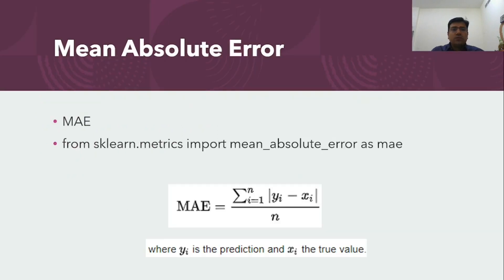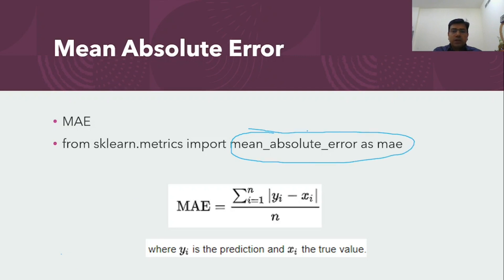So what are the different metrics we are going to see today? One is Mean Absolute Error, also represented as MAE. It can be computed with the method provided by scikit-learn. Basically, it gives the absolute difference between the actual value and the predicted value. You take the absolute difference, sum it up, and that's what MAE represents.